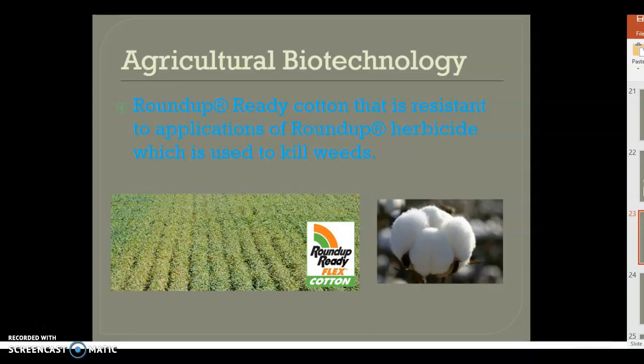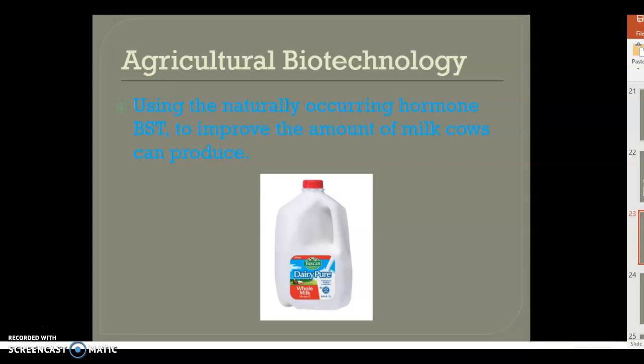Another example is using the naturally occurring hormone BST to improve the amount of milk cows can produce. This helps cows produce the amount of milk that humans consume, because there are a lot of people who drink and consume milk and we use a lot of milk in our products — sometimes cows cannot produce enough on their own.